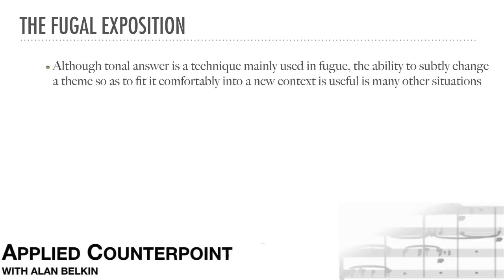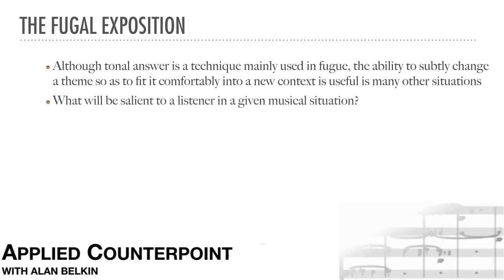Although tonal answer is a technique mainly used in fugue, the ability to subtly change a theme so as to fit it comfortably into a new harmonic context is useful in many other situations, including many that aren't even contrapuntal. A composer needs to become a very good judge of what kinds of changes attract attention — in other words, what will be salient to a listener in a given musical situation.